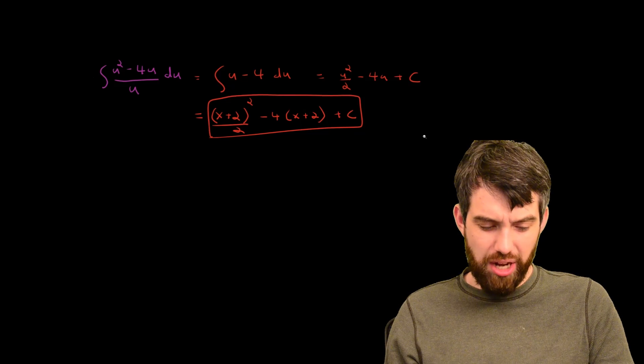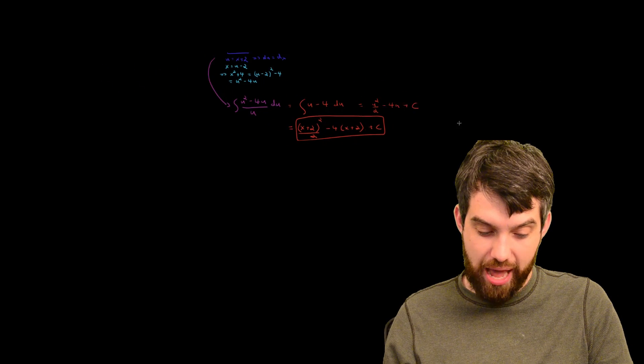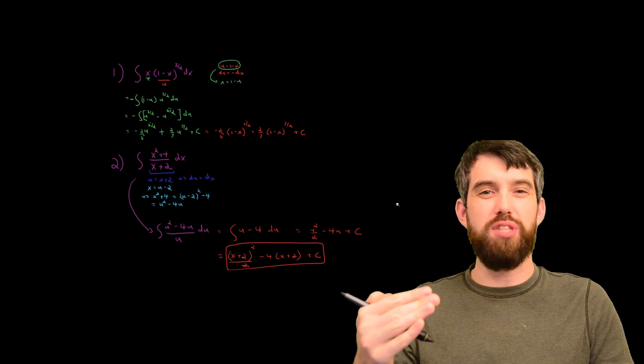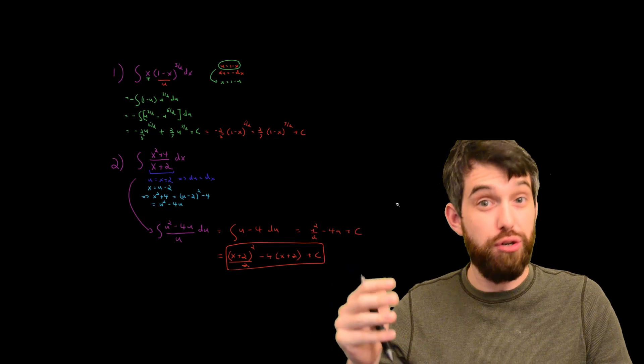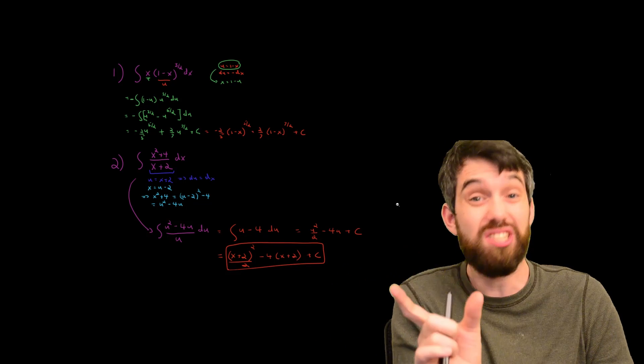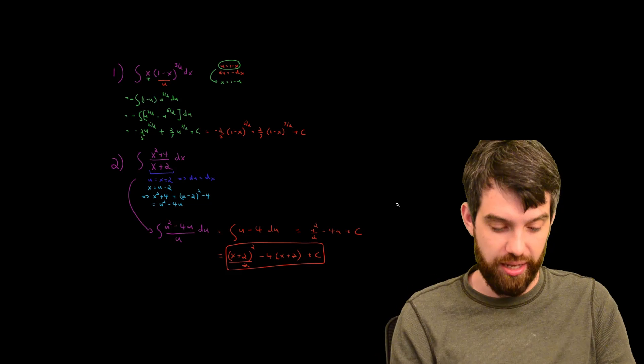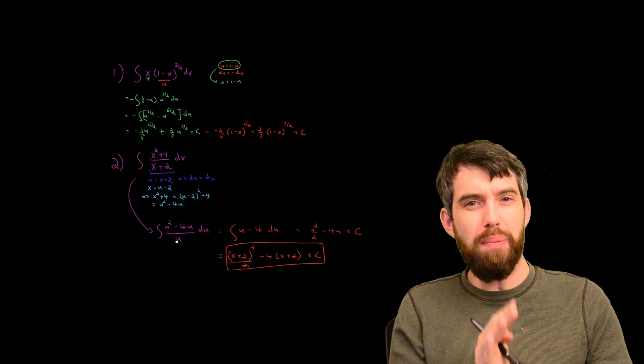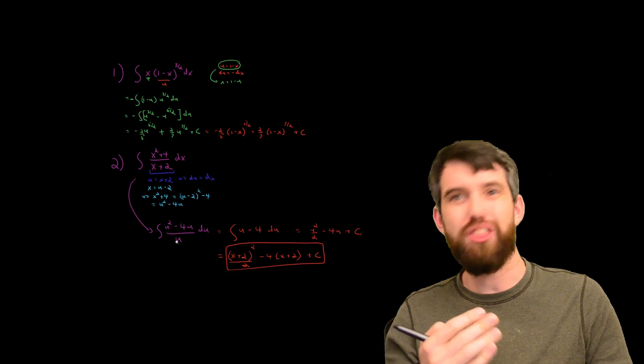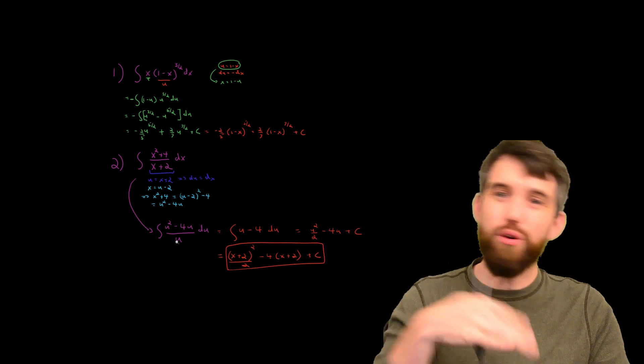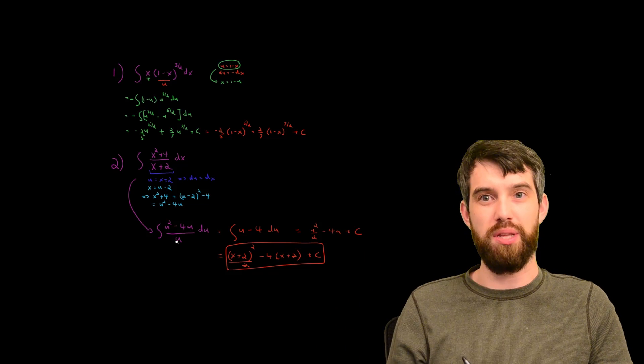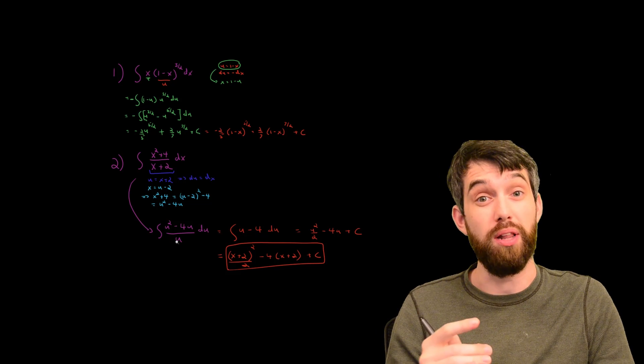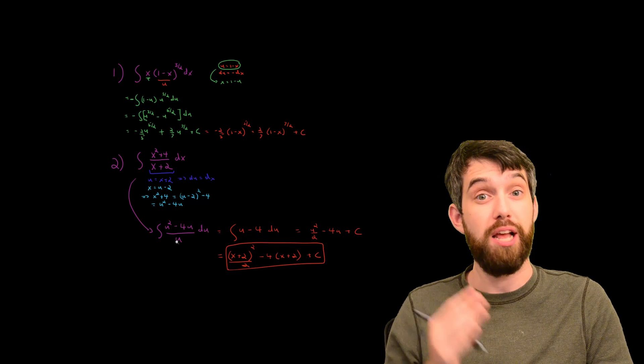So then, if we look at both of these two different examples that we have here, effectively what we were doing was saying we want to use the quote-unquote obvious substitution, as in we want u to be whatever the most inside-looking thing is. It was inside the three halves in the first example. It was the thing on the bottom in the second, but the problem was when we went to do du, there was other stuff in our integrand, and we had to take these other parts of our integrand and write them in terms of u, and hope that by a clever choice of u, that what we got was going to be integrable as well. And in both of these examples, that was the case.